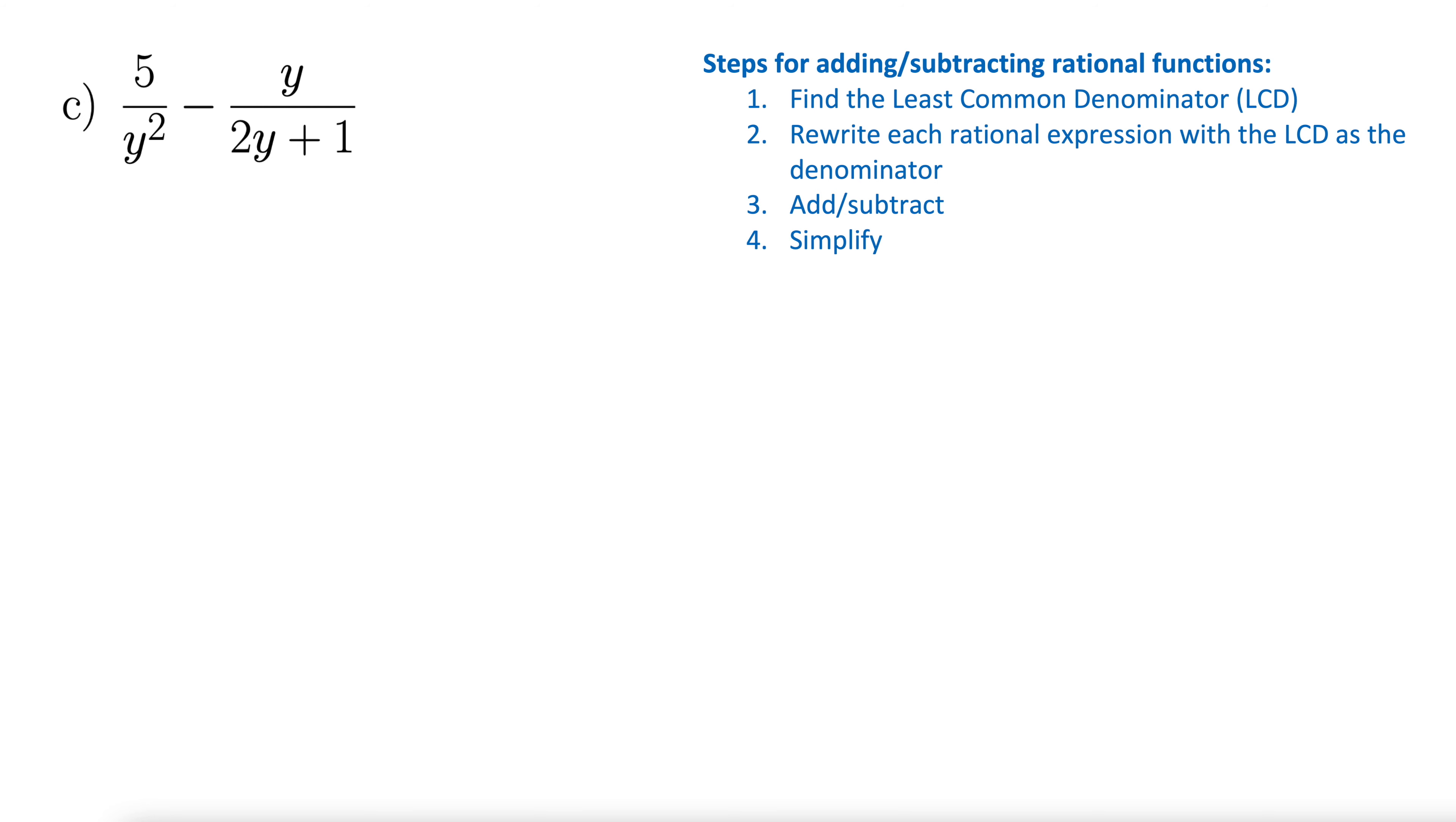Let's try another one. Here we have 5 over y squared minus y over 2y plus 1. Step 1, find the least common denominator. Well, I'm going to take my first denominator, add that in, y squared, and then I move on to my second denominator and say, what do I have to add into my LCD to make sure I've included my second denominator as well? Well, in the second denominator, we have 2y plus 1, so really nothing's in there. So let's go ahead and add in the whole thing, 2y plus 1. There's our LCD.